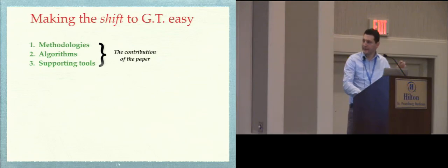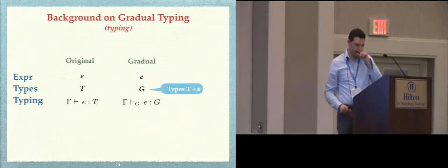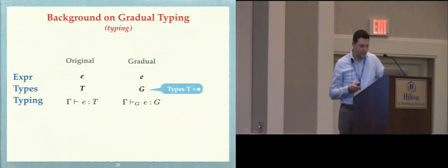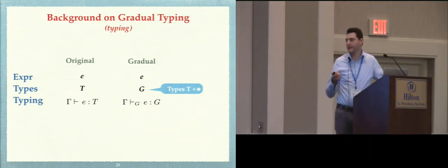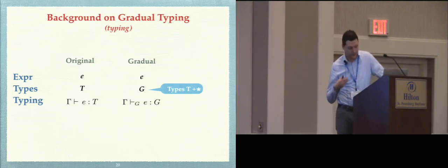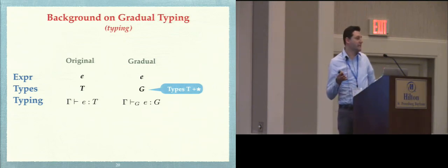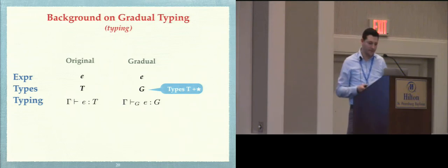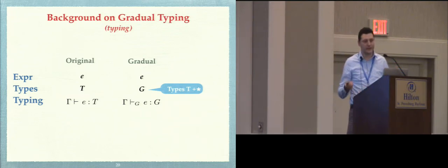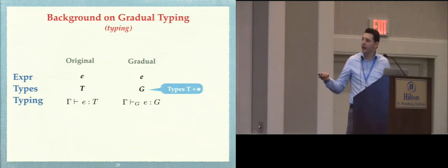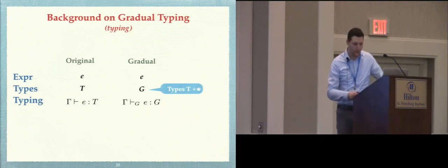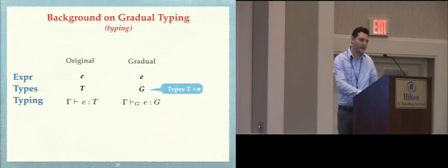Before going into the details of the contributions and scope of this paper, let's have some background on gradual typing. How do we gradualize languages? We start from a statically typed language. Even when injecting gradual typing into a dynamically typed language, the language designer has a type system target in mind. The gradual language basically interleaves types with the dynamic type. The type system will be a series of rules — let's be concrete with the examples we had earlier.